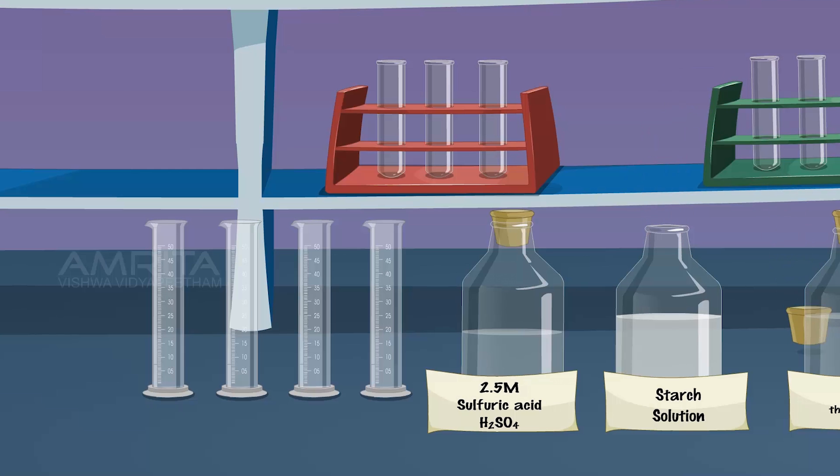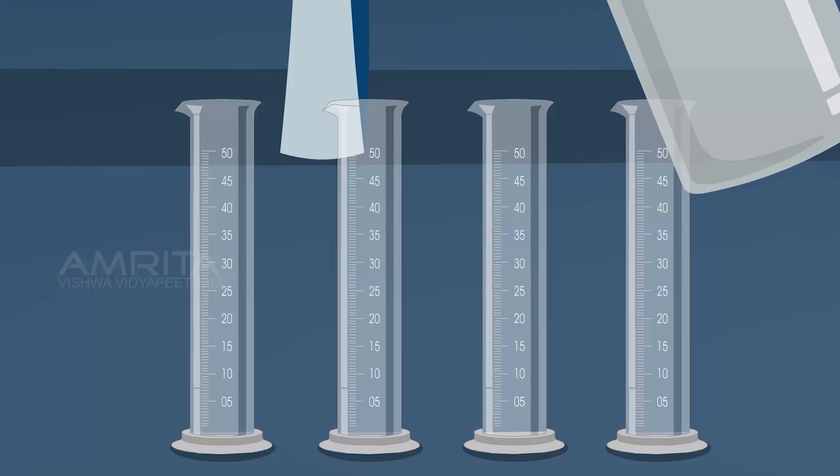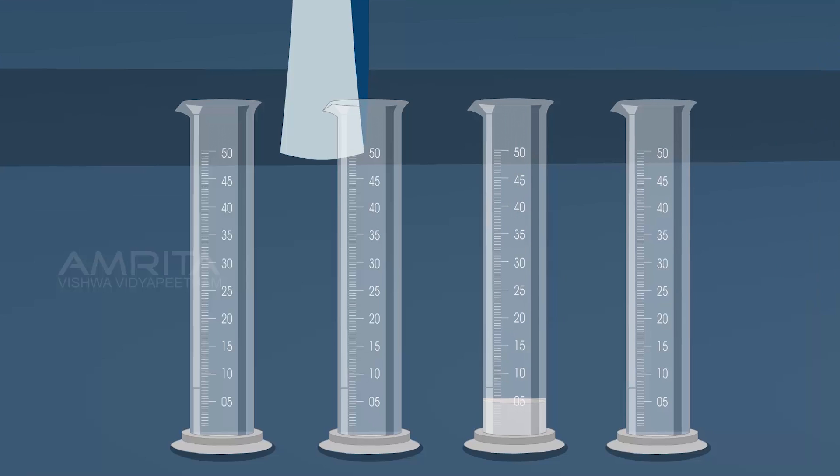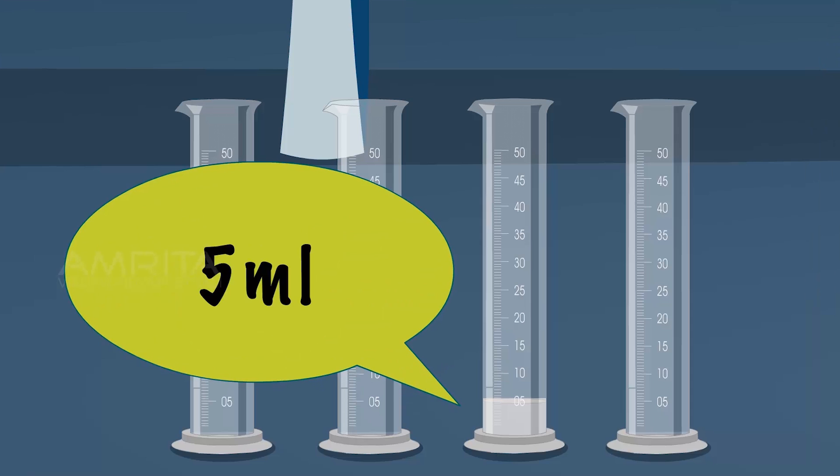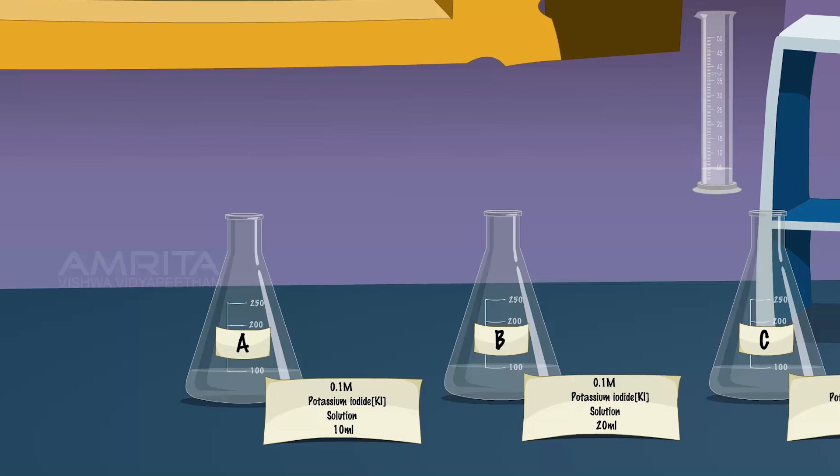Measure 5 ml of starch solution in a measuring jar. Pour it into flask A.